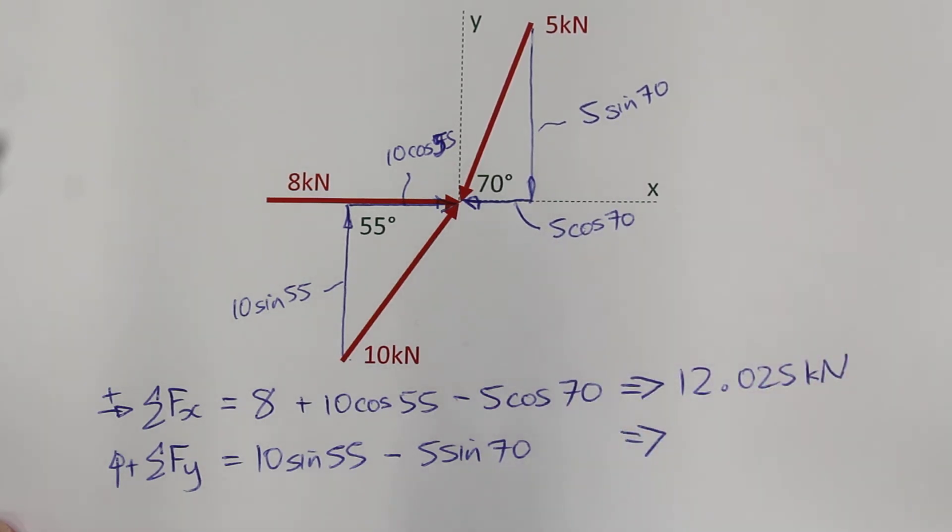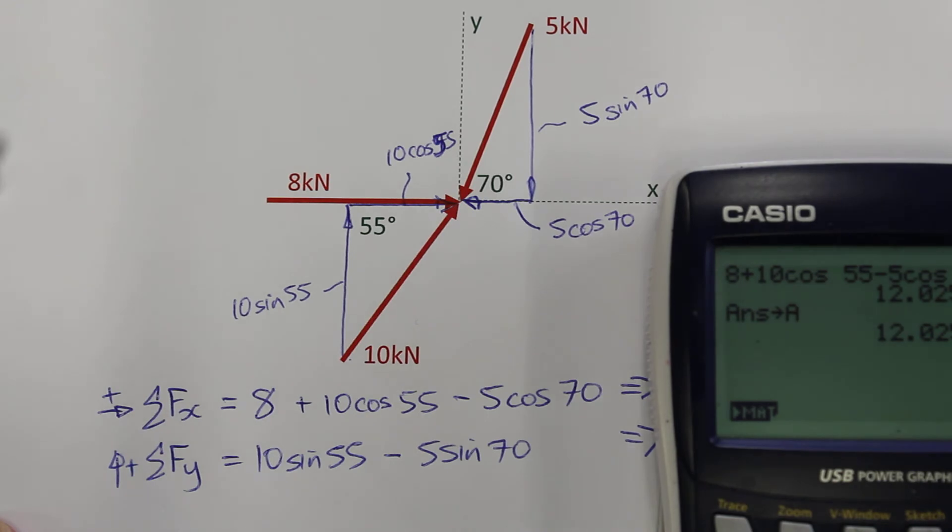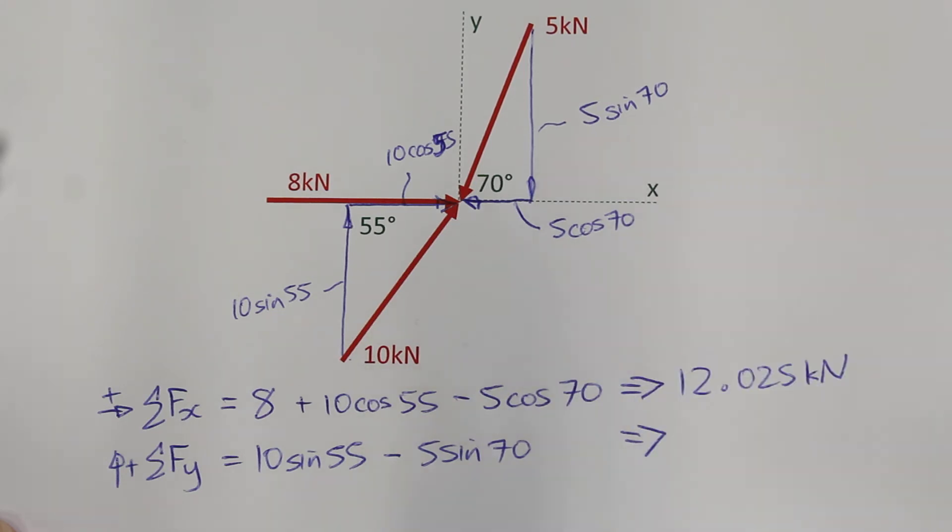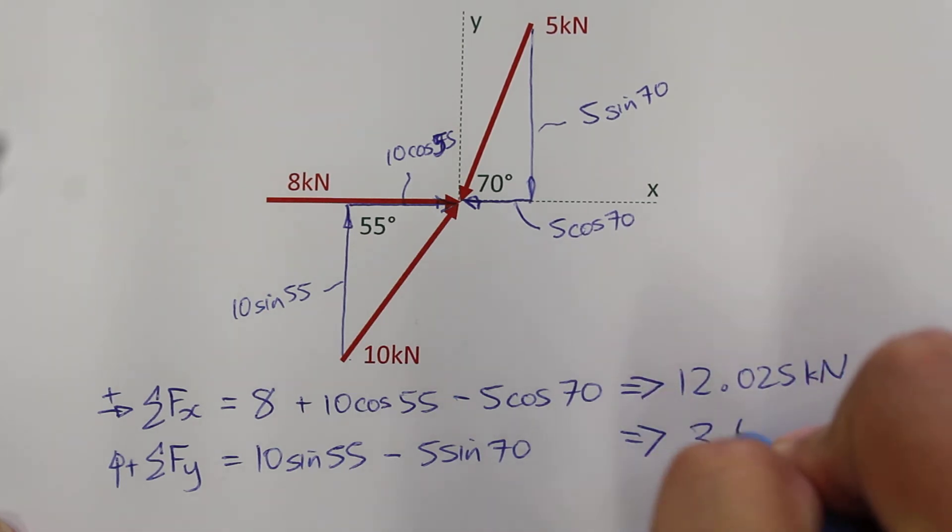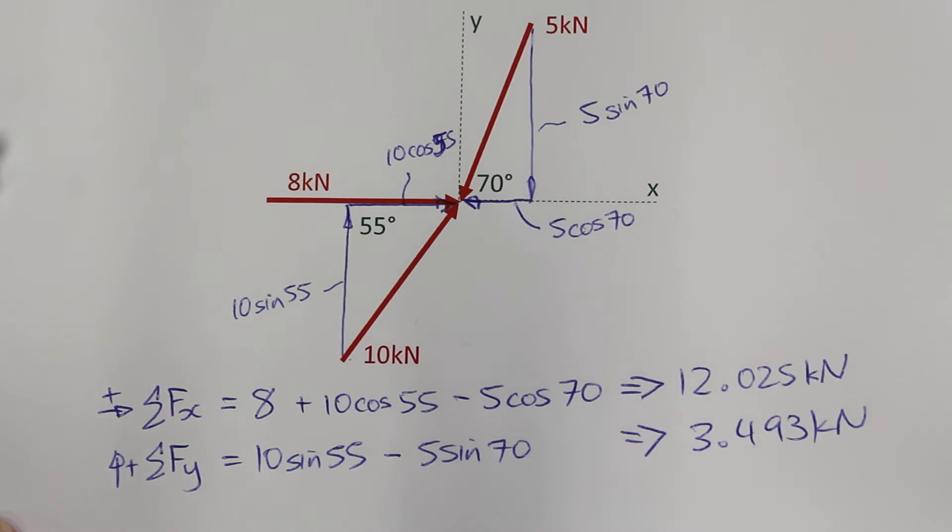The 8kN force has no component in the y direction. So adding those forces together, I have 10 times sin 55 minus 5 times sin 70, which equals 3.493, and the units being kN as each of these are in kN.